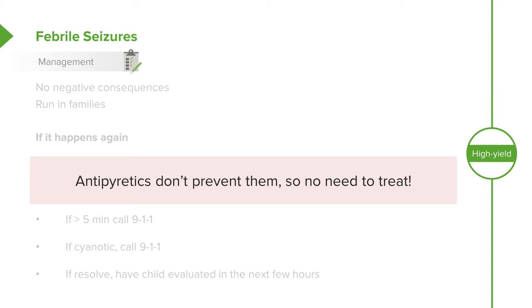What's key about febrile seizures is that antipyretics don't prevent them. In other words, telling families to use ibuprofen every time their child gets a fever to prevent seizures will not work. In children who've received that counseling, they have the same number of seizures as children who don't.